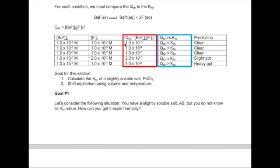We can take those values and calculate Qsp for each mixture. For example, for the first combination, 10 times 10 to the minus 3 times 10 to the minus 4 squared gives us 10 to the minus 11. We then compare that Qsp to Ksp, which is 1.84 times 10 to the minus 7. So Qsp is less than Ksp in this case. This leads to a prediction of a clear solution.